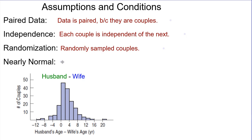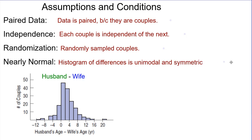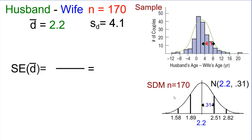Nearly normal — did our sample show us that we think the population itself was normal? Even if it wasn't, the central limit theorem would kick in with a sample size of 200 and we would definitely be fine. Remember even the CEO data — even though that data was incredibly skewed, it still gave us a sampling distribution model well approximated by a normal curve with sample sizes of 200. Our histogram for the differences is unimodal and symmetric, so we believe the population itself was normally distributed.